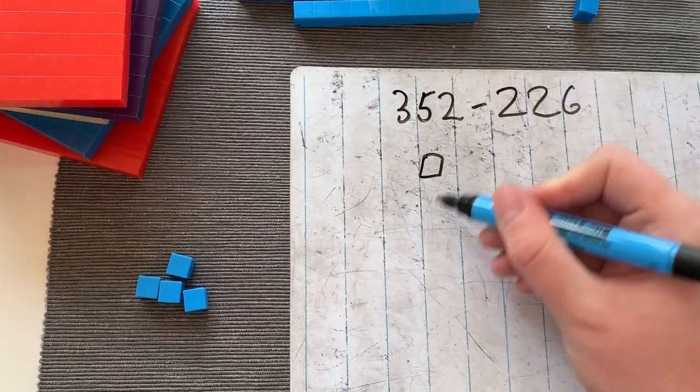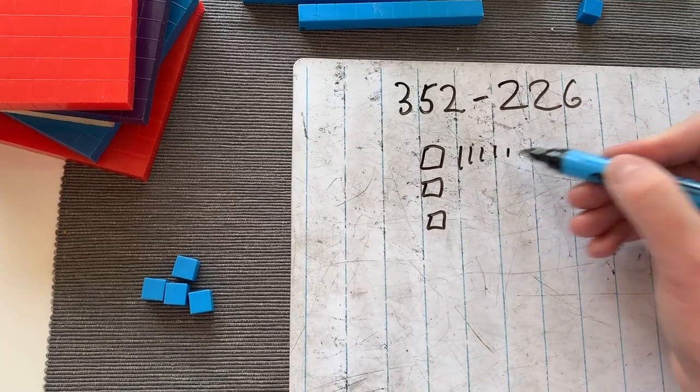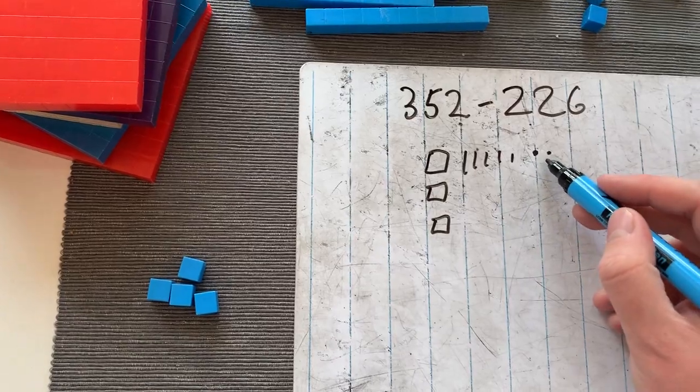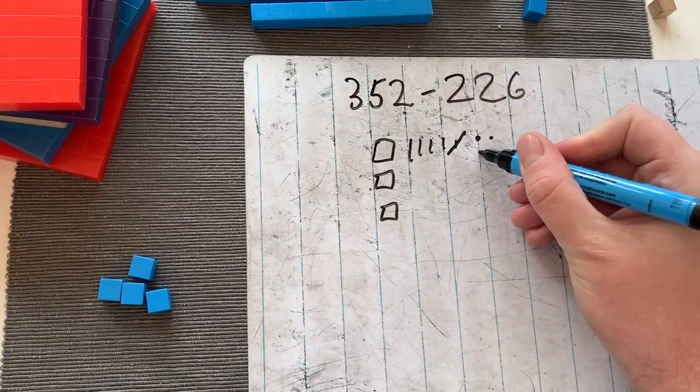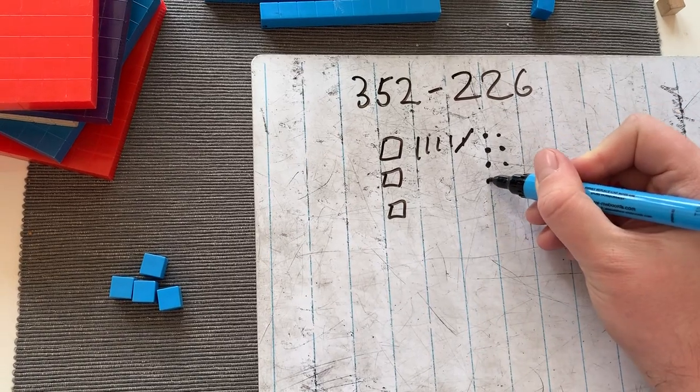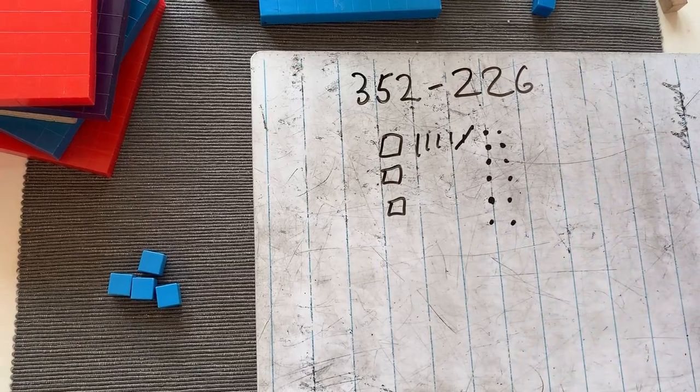So I'll just draw it again to keep it simple. Three hundreds, five tens, and two ones. Now I'm going to take away six ones, but no, I can't do it. So I cross out a 10 and I draw in my 10 ones. I'm going to exchange: 2, 4, 6, 8, 10. Fab.